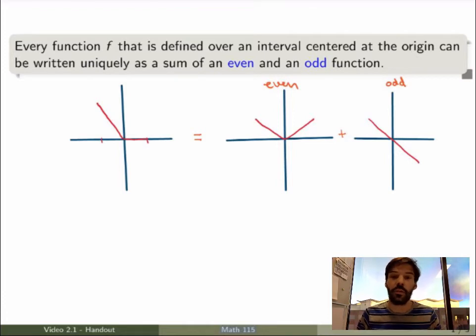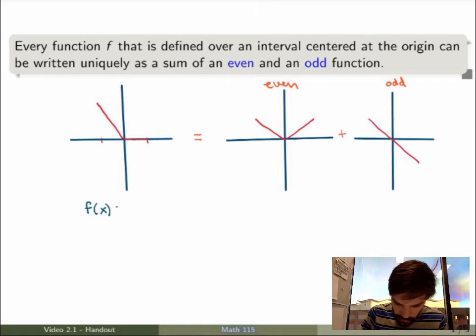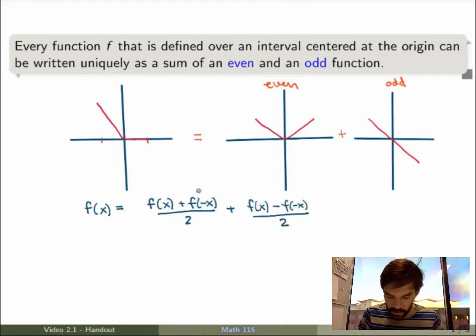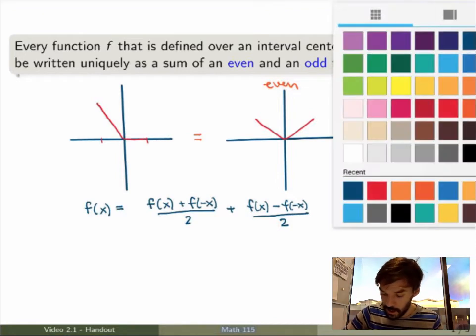So how can we do that? Well we just use the following trick. So start with an arbitrary function f, you can always rewrite it as follows: f plus f over 2 plus f minus f over 2. Of course you can always do that, because the right hand side is just f, right, the first term plus the third term gives me f, and the second term cancels with the fourth term.